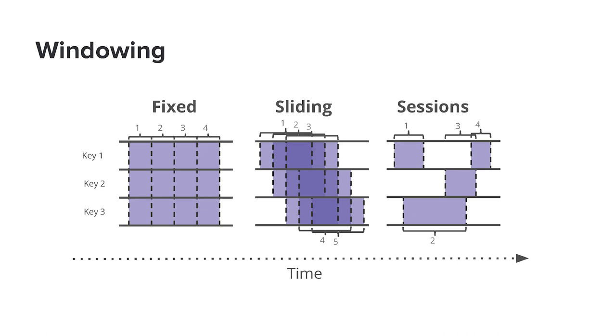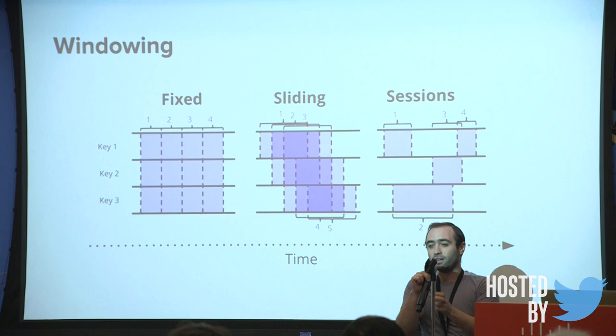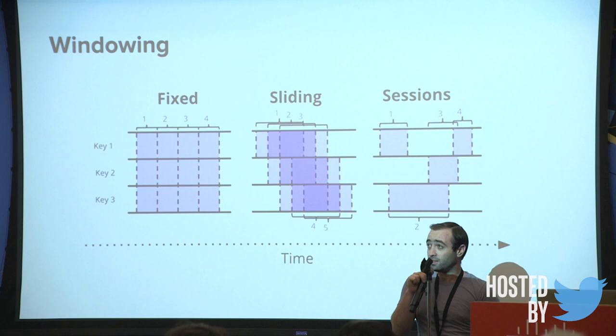Stream processing requires thinking about your computations a little differently than you might be used to for batch. You're probably going to want to divide up your data into time windows. The simplest to understand is a fixed window — data from 5:00 to 5:01, 5:01 to 5:02 — and we do some computation over each of those windows. Slightly more elaborate is a sliding window where we still have a fixed length window, like five minutes, but the window slides by, say, a minute so we can get some notion of history while still updating it on a regular basis.